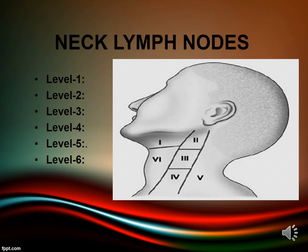Level VI contains paratracheal and pretracheal nodes. The rule of seven provides a probable diagnosis of neck mass based on average duration of patient symptoms: seven days — inflammation; seven months — neoplasm; seven years — congenital defect.